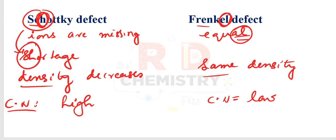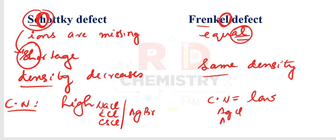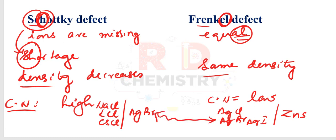Examples: Schottky defect is shown by sodium chloride, potassium chloride, and cesium chloride. Frenkel defect is shown by silver chloride, silver iodide, and zinc sulfide. Silver bromide is common to both cases, so it can show both Schottky and Frenkel defects.